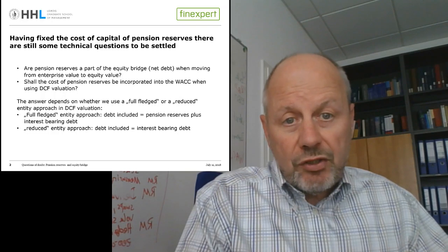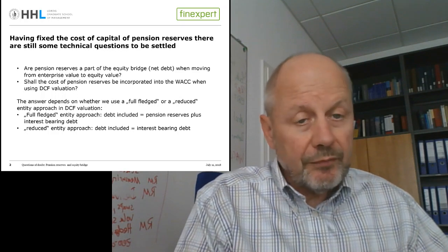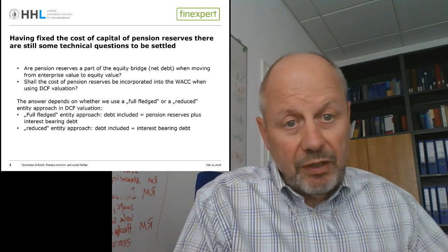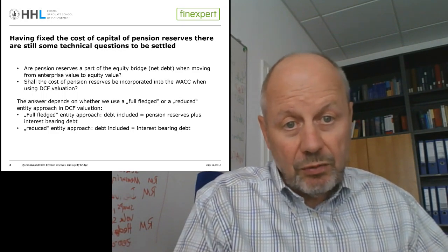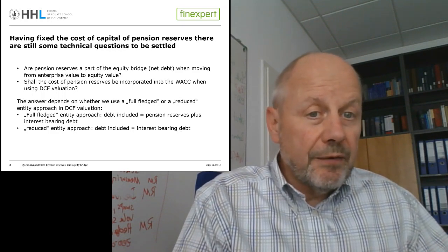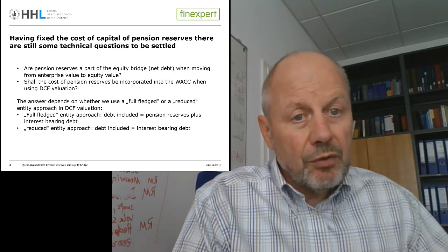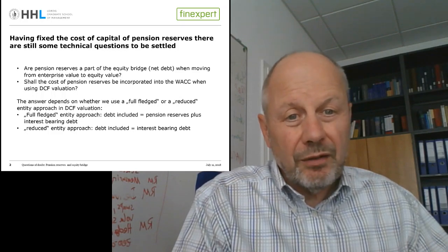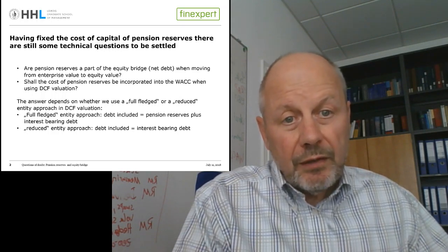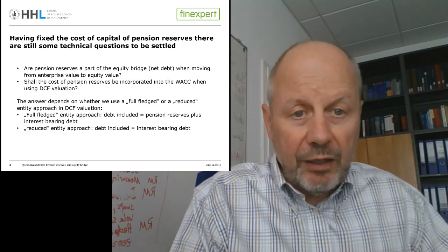In one of our last sessions, we tackled the problem of estimating properly the costs of the pension reserve. My personal recommendation was that, as long as we don't have any internal information and are outsiders to the firm to be valued, we should assume that the wage substitution rate of the service cost is equal to 100%, because this yields the convenient result that the applied costs of the pension reserves are equal to the interest costs in the profit and loss statement of the firm. We will work with this assumption.